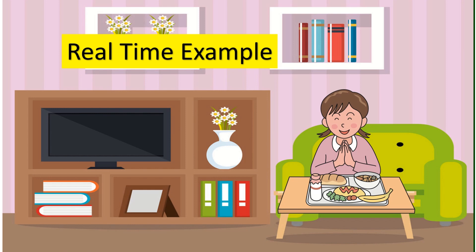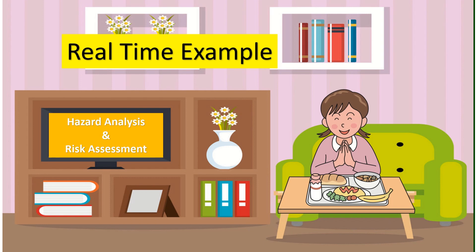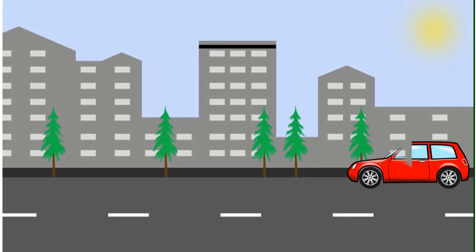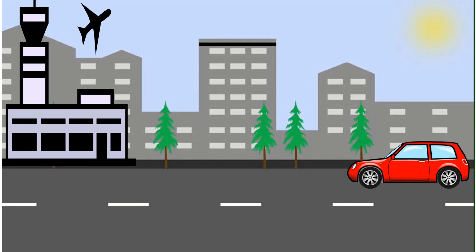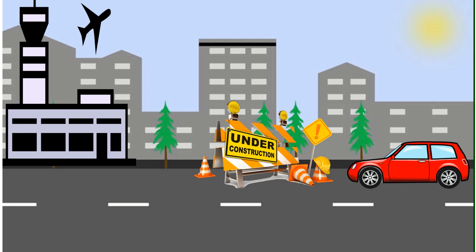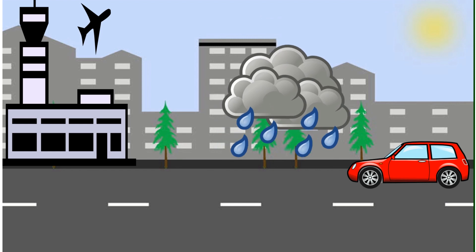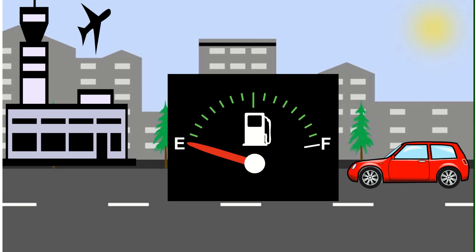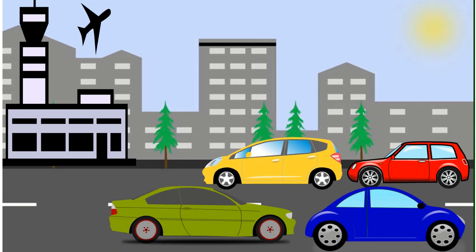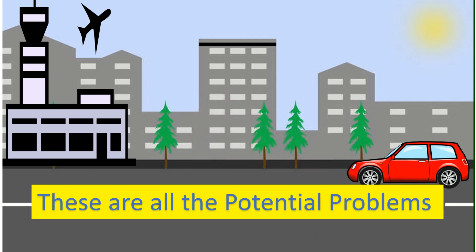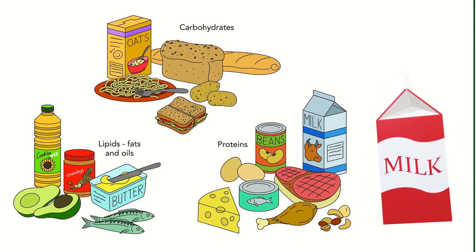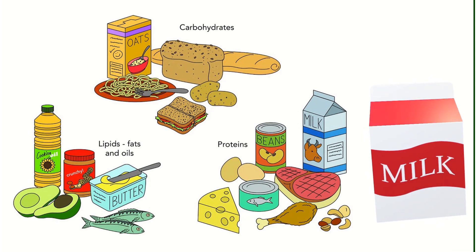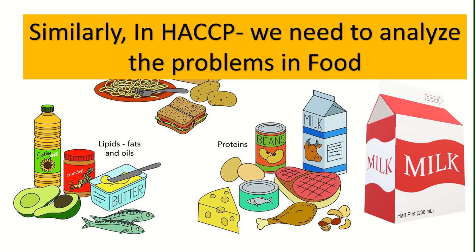To understand the difference between hazard analysis and risk assessment, let's take a real-life example. You have to catch a flight and your objective is to reach the airport at 5 pm. What problems and hurdles come in between? For example: road construction, bad weather conditions, petrol or car issues, traffic jams, or any protest that could block the roads. These are all potential problems. Similarly, in HACCP the objective is to produce safe food, and we call the problems in food 'hazards.'